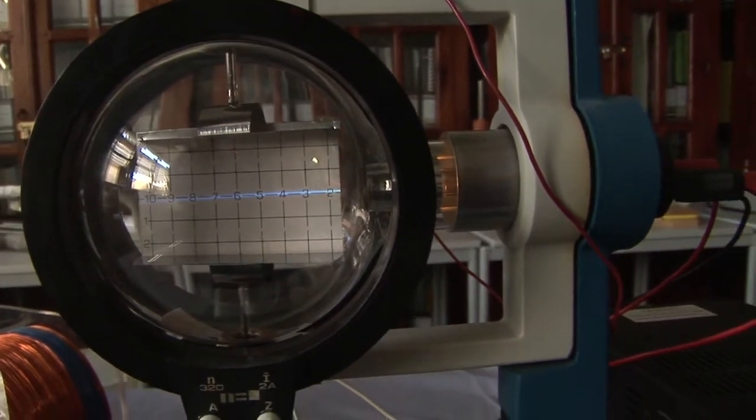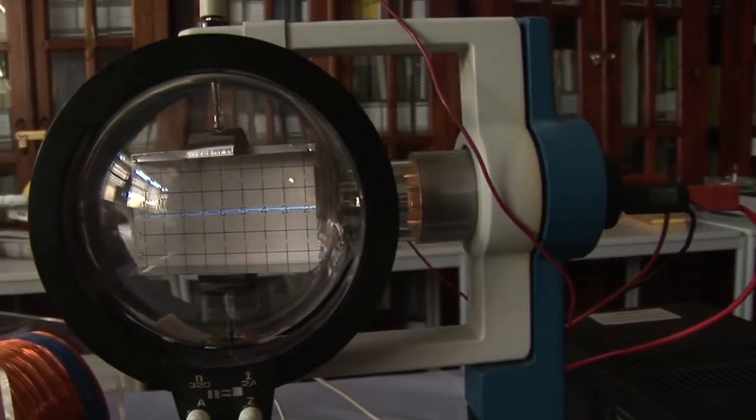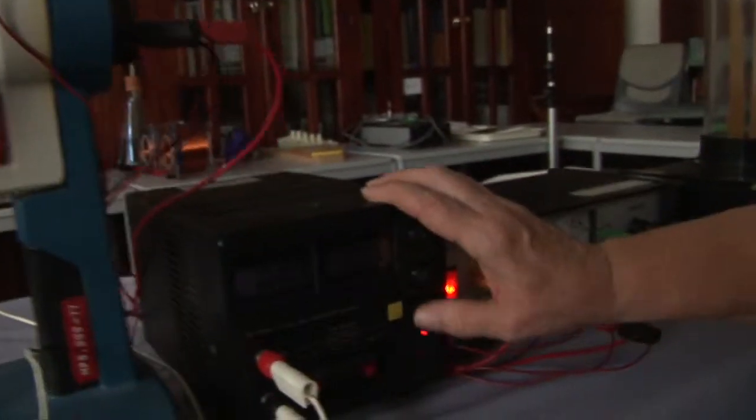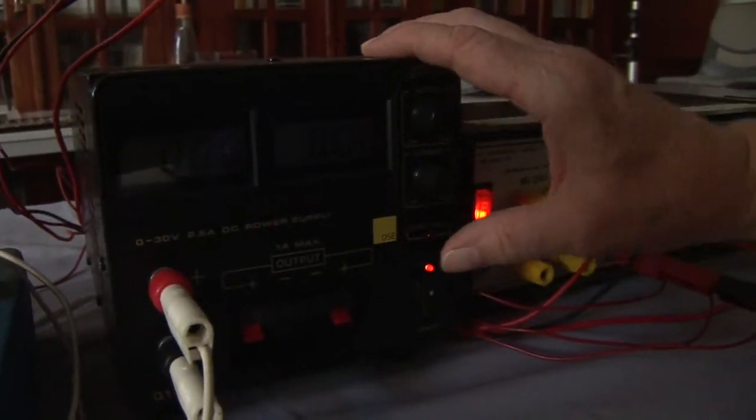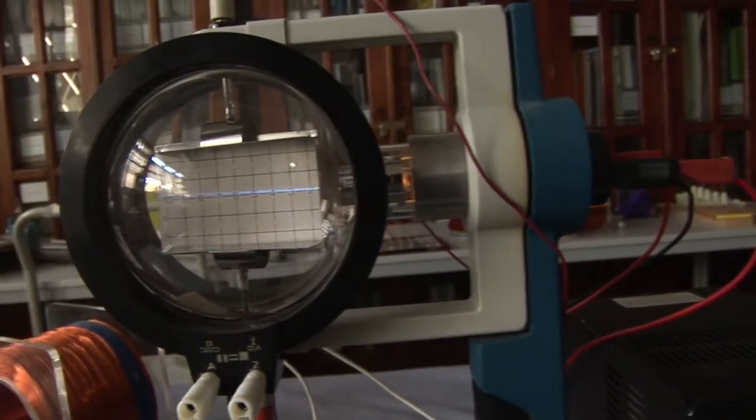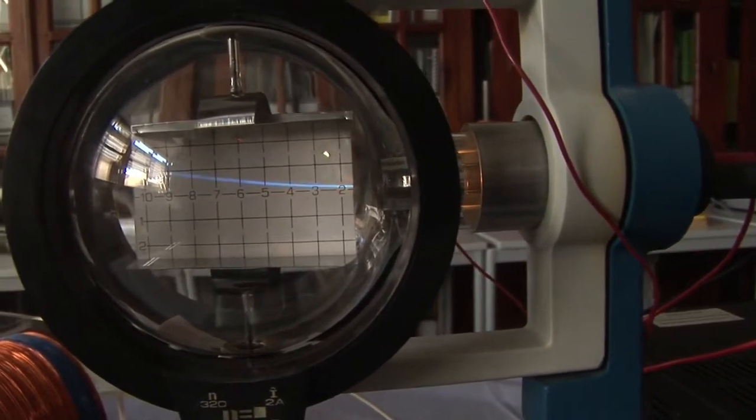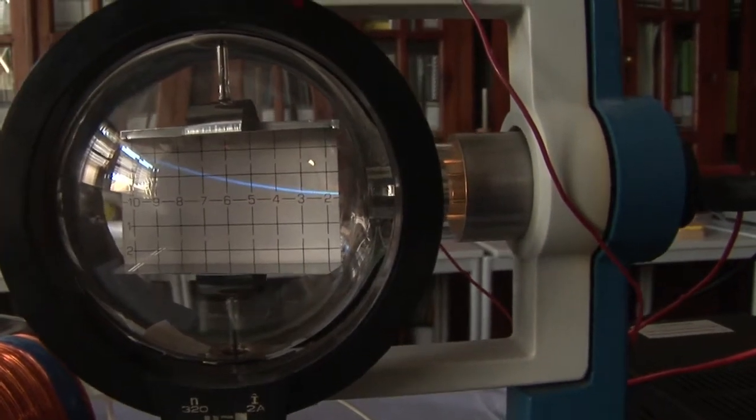Now, if we put a magnetic field on these, either side of these electrons, by turning on over here and increasing the voltage, we can see as we increase the voltage, the electron beam curves upwards.